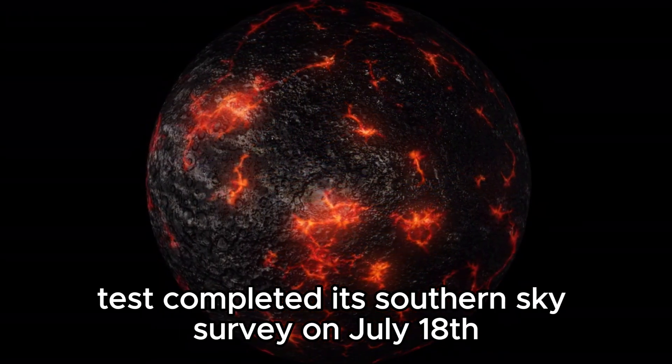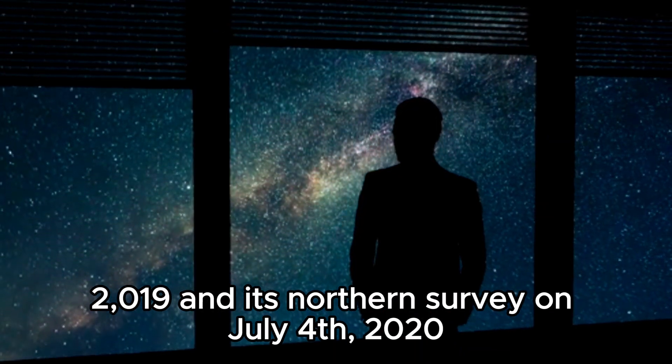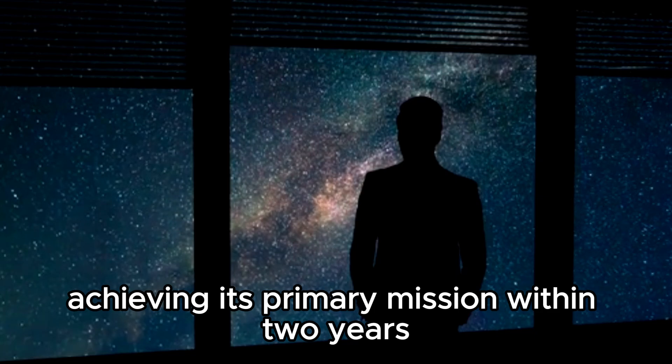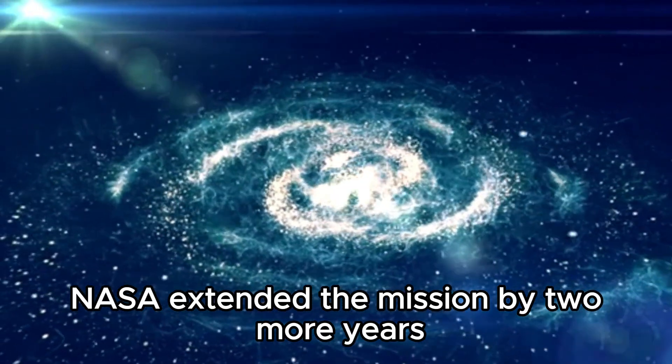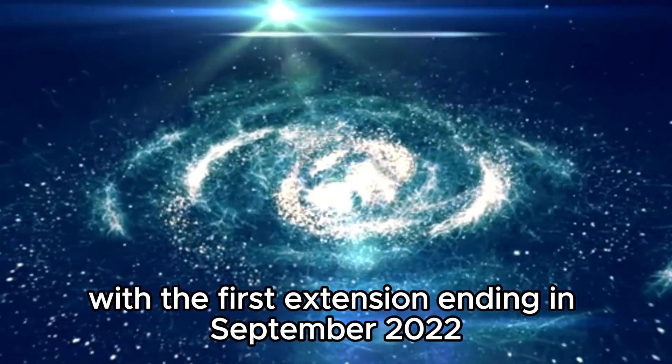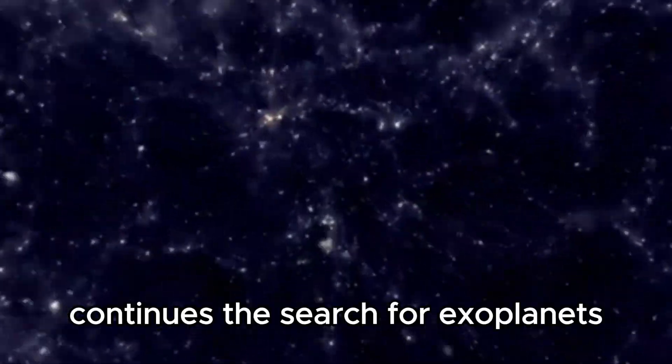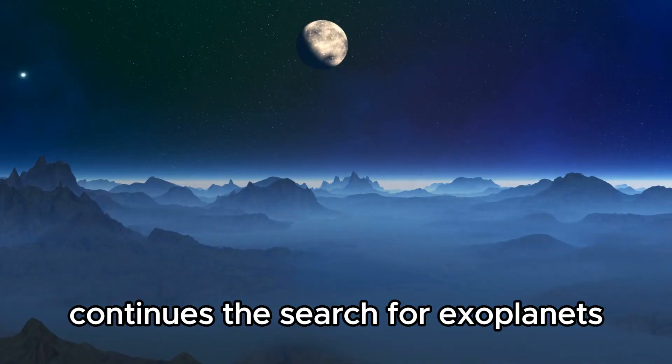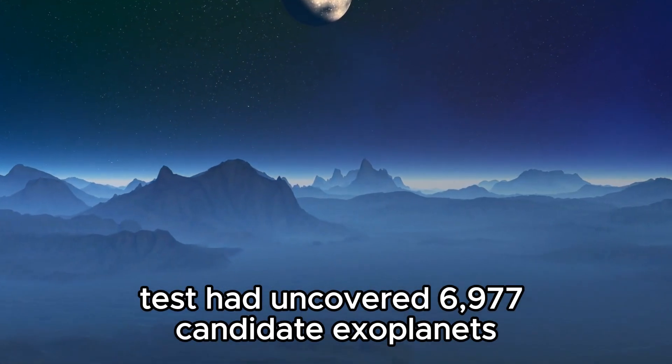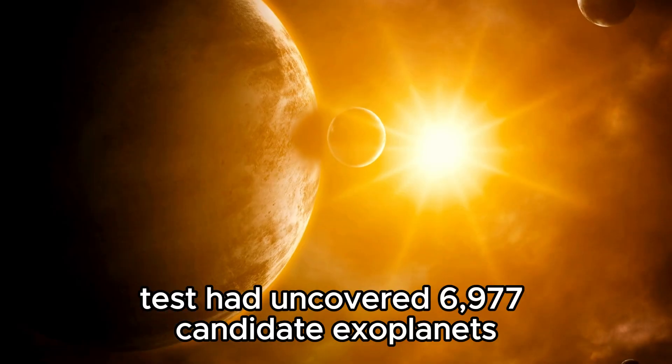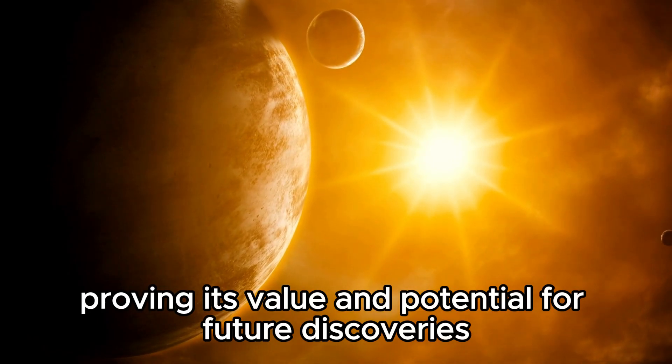This orbit allows stable imagery of both hemispheres of the sky for at least 10 years. TESS completed its Southern Sky Survey on July 18, 2019, and its Northern Survey on July 4, 2020, achieving its primary mission within two years. NASA extended the mission by two more years, with the first extension ending in September 2022. The second extended mission, expected to last three years, continues the search for exoplanets. By November 15, 2023, TESS had uncovered 6,977 candidate exoplanets, with 402 confirmed, proving its value and potential for future discoveries.